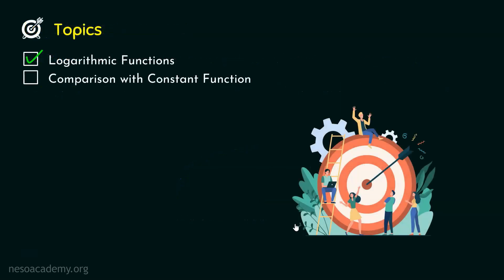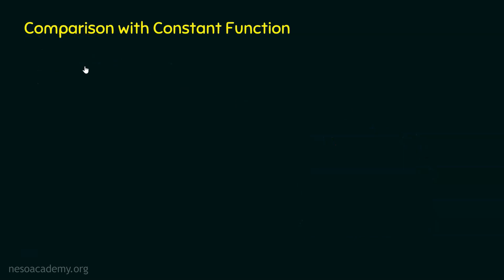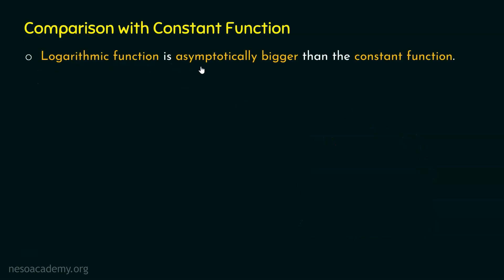Now let's compare logarithmic functions with constant functions. A logarithmic function is asymptotically bigger than the constant function — this is always the case. Let's try to prove this through a problem.